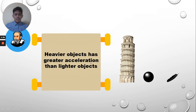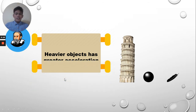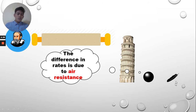It was generally believed that heavier objects have greater acceleration than lighter objects. But the result showed that the cannonball reaches the bottom first — not because the cannonball is heavier than the feather, but because of air resistance. The difference in rates is due to air resistance. The two objects have the same acceleration, but air resistance acts on both objects differently, which is why the feather takes longer to reach the ground.